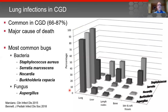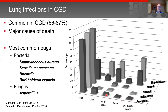Lung infections are common in CGD and are the major cause of death in the United States for these patients. Characteristic organisms include bacteria such as Staph aureus, Serratia, Nocardia, and Burkholderia, and fungi such as Aspergillus. This graph illustrates these organisms along with the areas of involvement they affect, showing that the lung is by far the most commonly involved site, with increasing frequency from Staph through Nocardia, Burkholderia, and Aspergillus.